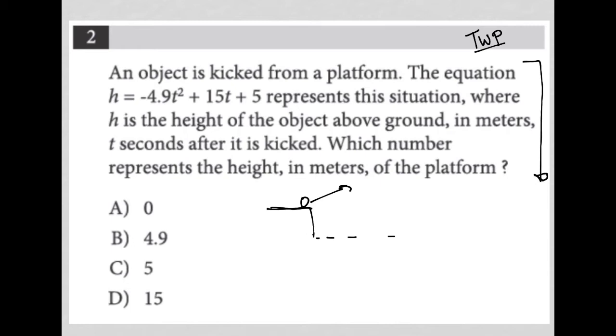The equation H equals negative... Anytime I see equations, I like to write them down. So H equals negative 4.9 T squared plus 15 T plus 5 represents this situation where H is the height